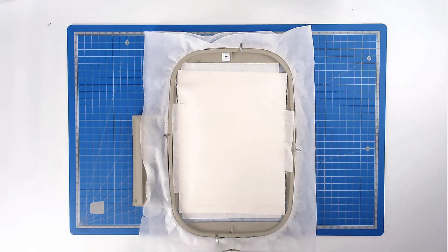We're now going to pop your hoop into your machine and stitch round number three and that's going to secure your fabric to the hoop.